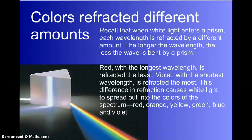Colors are refracted different amounts. So, we notice that red is refracted the least, and violet is refracted the most. That's because red has the longest wavelength, is refracted the least. Violet has the shortest wavelength. This difference in refraction causes white light to spread out into the colors of the visible spectrum. Red, orange, yellow, green, blue, indigo, and violet.